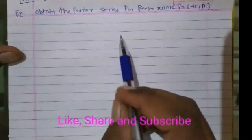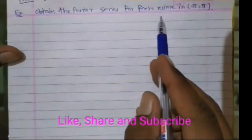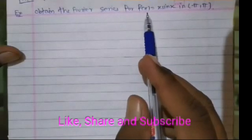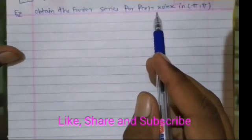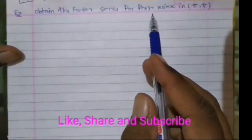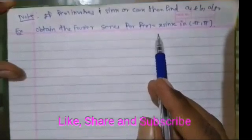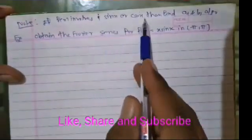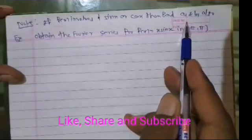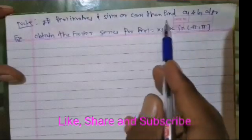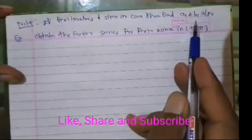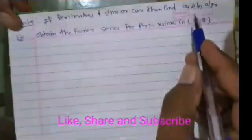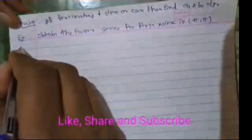This problem is: obtain the Fourier series for f(x) = x·sin(x) in the interval minus pi to plus pi. Before starting the solution, one concept is important: if f(x) involves sin(x) or cos(x), then we have to find a1 and b1 separately — after finding an we find a1, and after finding bn we find b1. We will see why in this example.